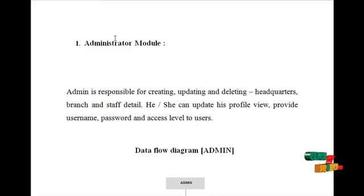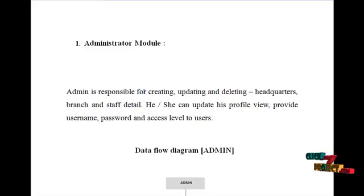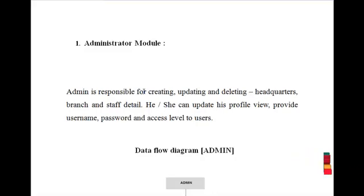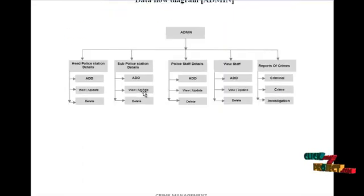Let's start from the admin model. Admin is responsible for creating, updating, and deleting headquarter details, branch details, tab details, etc. Admin can view their own profile details and change their password periodically for security reasons. Admin can communicate with other users through Skype services or through mail services. The data flow diagram for admin is as shown below.